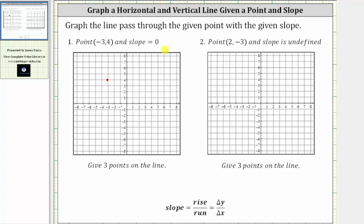Whenever using the slope to graph a line, it's helpful to have the slope in fraction form. To write any integer as a fraction, we can form the fraction by making the denominator one. So the given slope m is equal to zero, which is equivalent to zero divided by one. Notice in fraction form, we know the change of y is equal to zero when the change of x is one. Or we can say the vertical change is zero and the horizontal change is one.